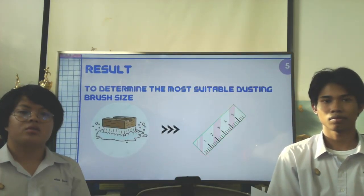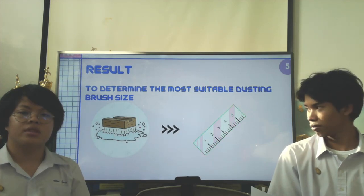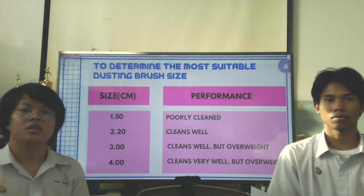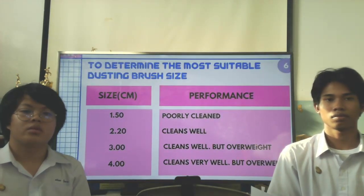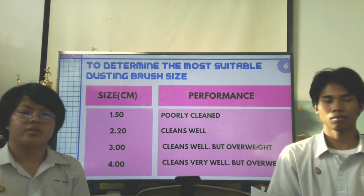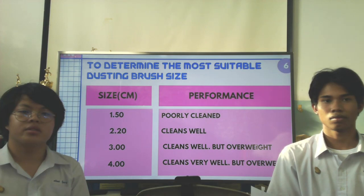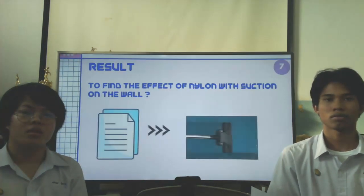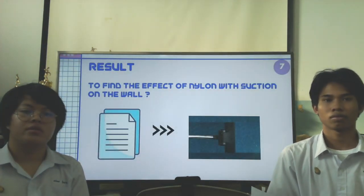Results to determine the most suitable dusting brush size: size 1 per 5 cm, 2 per 2 cm, 3 cm, 4 cm — performance fully well, kids well, always very well, always good. Results to find the effect of nylon with suction on the wall.